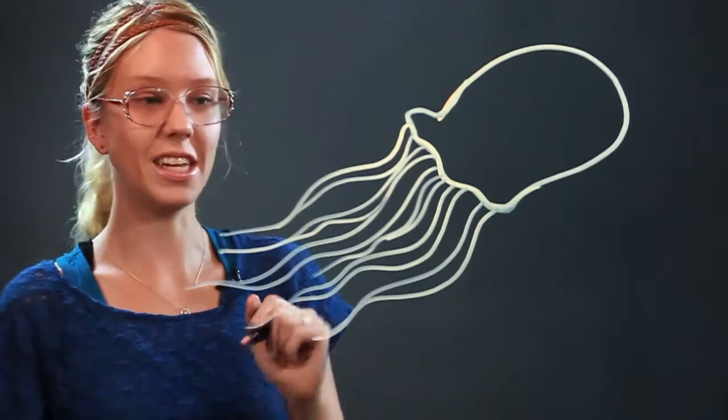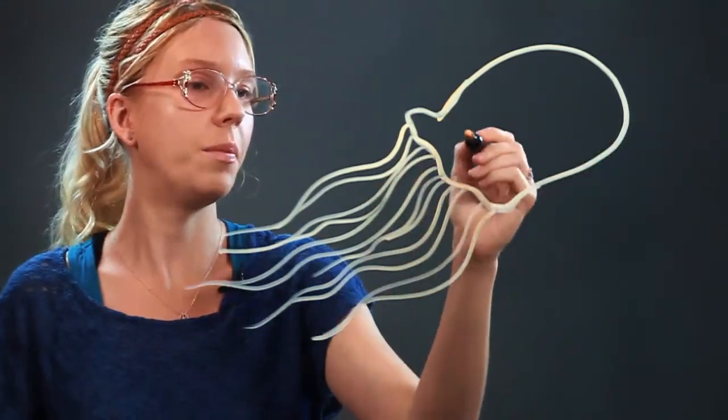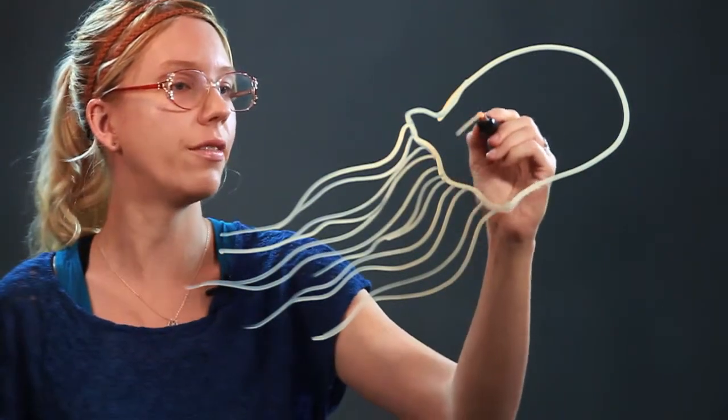When you're happy with how many little tentacles they have, you can even draw bits inside of the jellyfish, kind of almost like a brain inside of it, because you know they're see-through and they have all these little floating jelly bits.